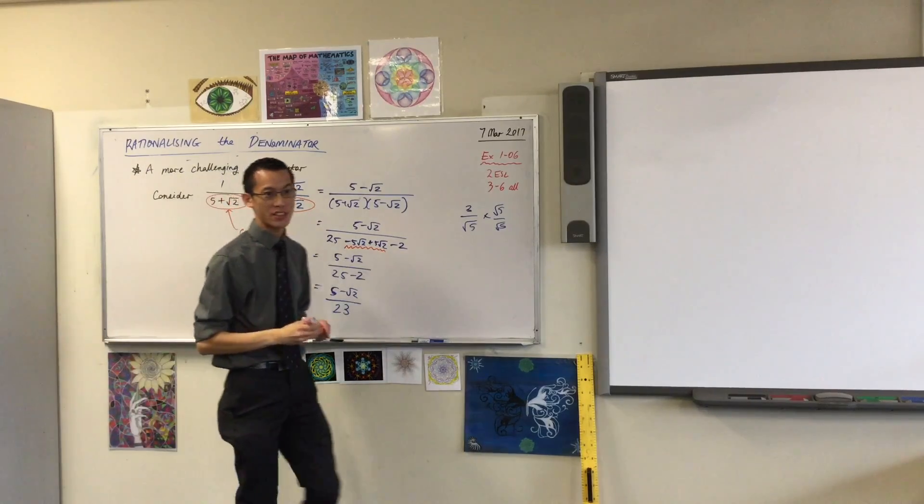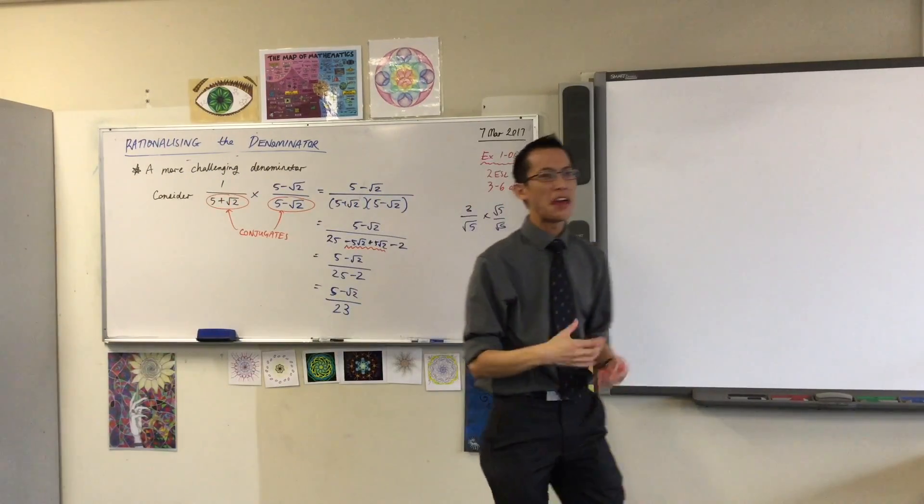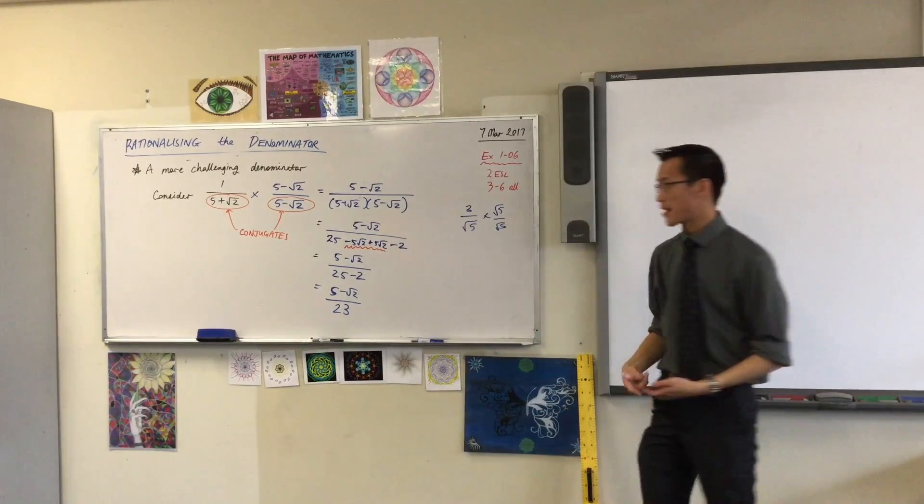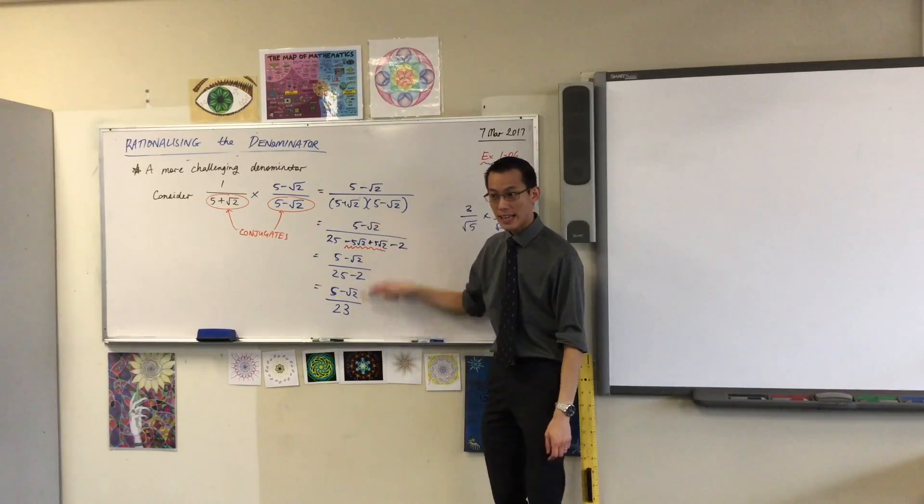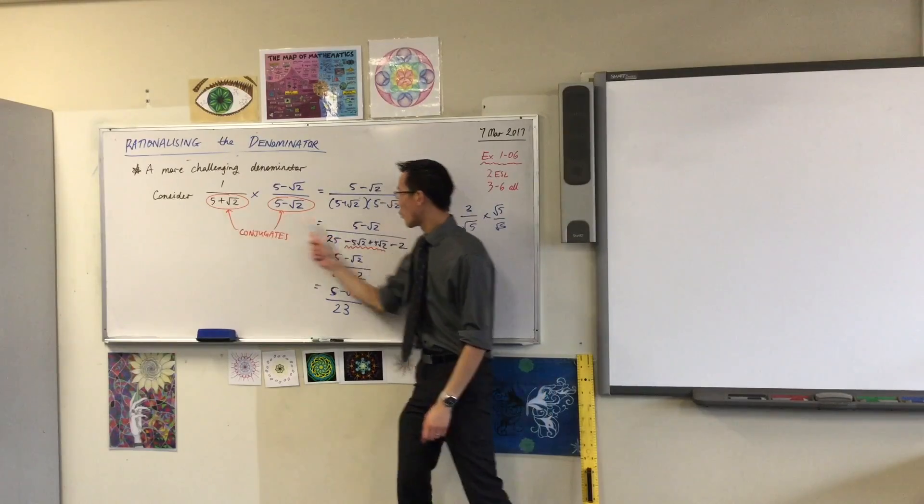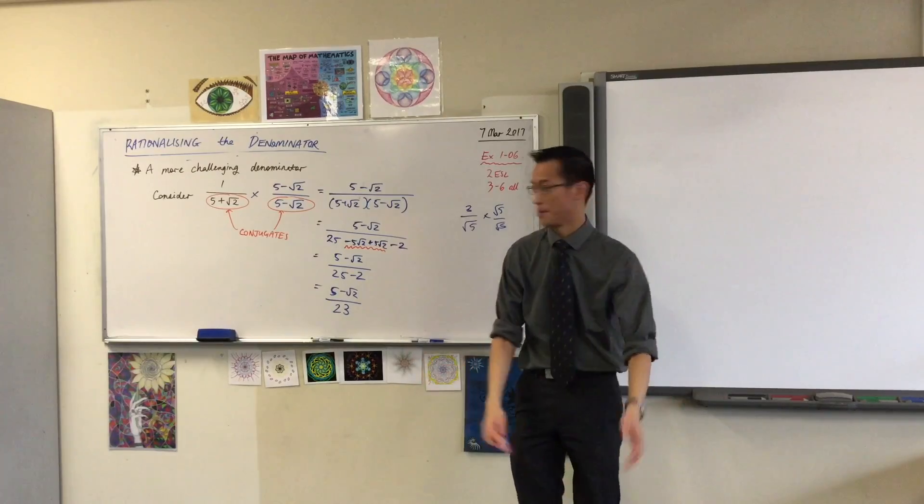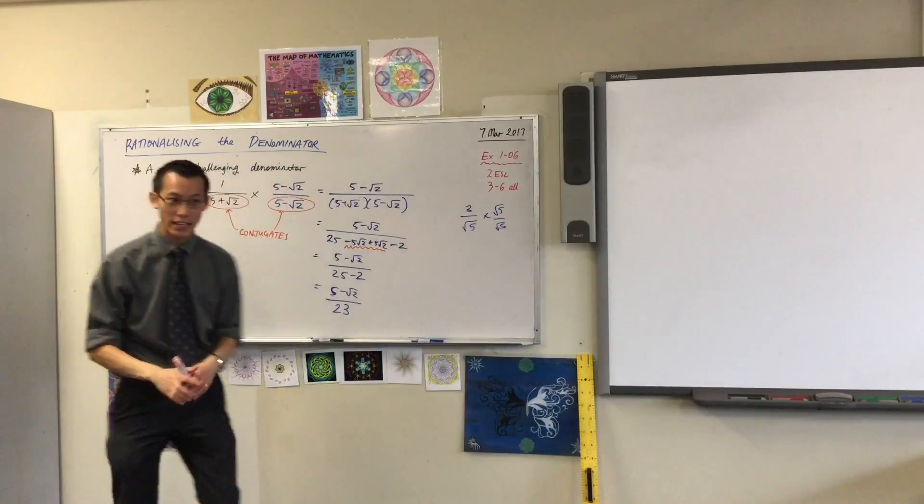We call these guys conjugates. Conjugates is a word which just means they pair up. They go together. They match in some useful way. And the useful way that they match up with is like this. Do you see that when you expand this, these middle terms, they have to cancel out every time. You can make up any conjugates you like and it'll happen.